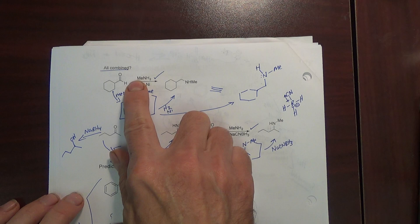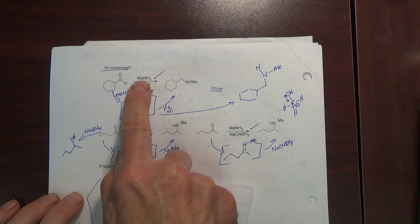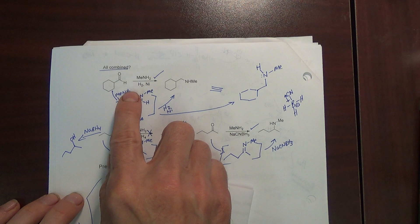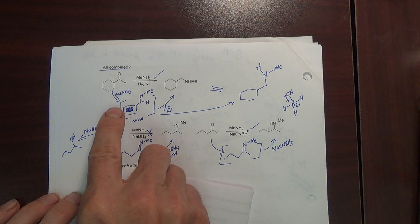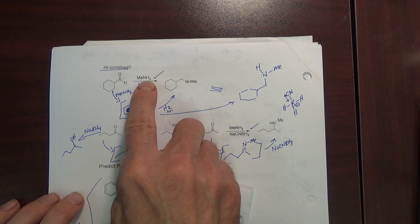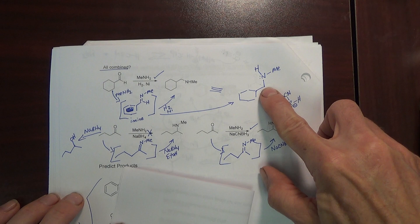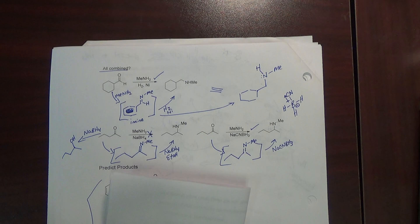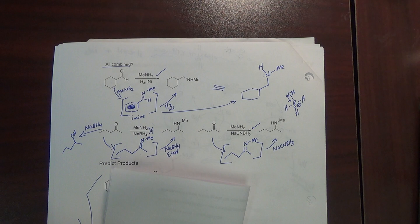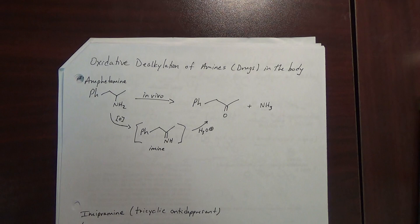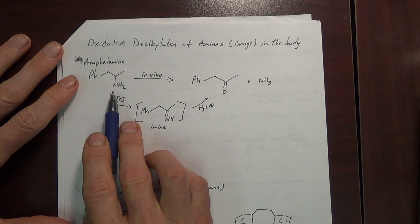Going forward we can consider it an alkylation of the nitrogen, because we added an alkyl group. There are a couple different ways to consider what's going on here. Reductive amination sort of focuses on the aldehyde or ketone, but alkylation focuses on the fact that we add an alkyl group to the nitrogen. The alkyl carbon used to be a carbonyl. So if we go backwards we can remove an alkyl from the nitrogen, and that's what happens with a number of drugs in the body that contain amines, like amphetamine.